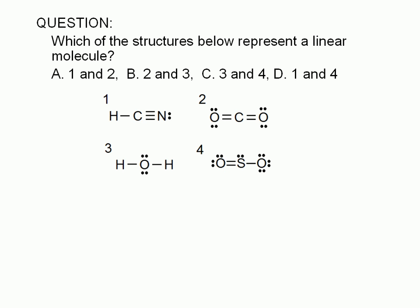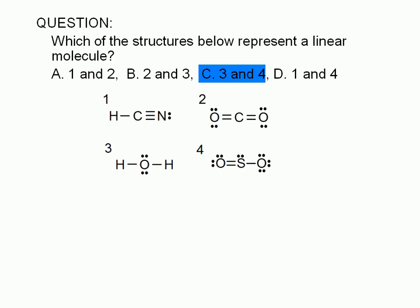Which of the structures shown here represent a linear molecule? A, 1 and 2. B, 2 and 3. C, 3 and 4. Or D, 1 and 4?